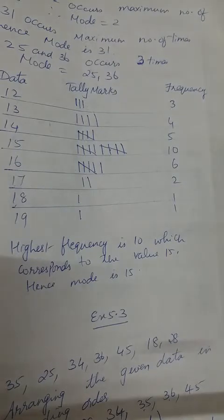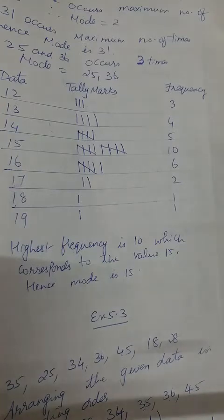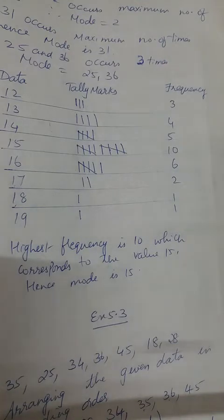Next is the seventh one — find the modes of the data 2, 1, 1, 3, 4, 5, 2. Here 2 is repeating 2 times, and 1 is also repeating 2 times. So the mode of the data is 2 and 1. This completes exercise 5.2.